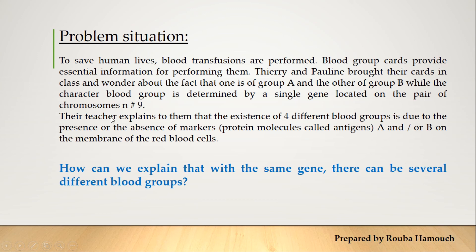Their teacher explains that the existence of four different blood groups — group A, group B, group O, and group AB — is due to the presence or absence of markers, protein molecules called antigens, antigen A and/or antigen B, on the membrane of the red blood cells.